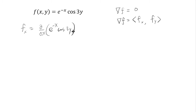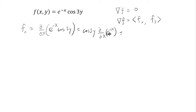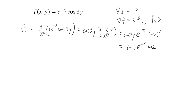Even though cosine 3y looks like a function, it's just a number — you have to treat it like a constant. Constant multiples can be brought outside; they don't do anything. All you have to do is differentiate e to the negative x. Using the chain rule, you differentiate e to this outside function, which doesn't change — exponential functions don't change. Then you pull the minus x out and differentiate, and negative x prime gives you negative 1. Therefore, you have negative 1 · e^(−x) · cosine(3y).